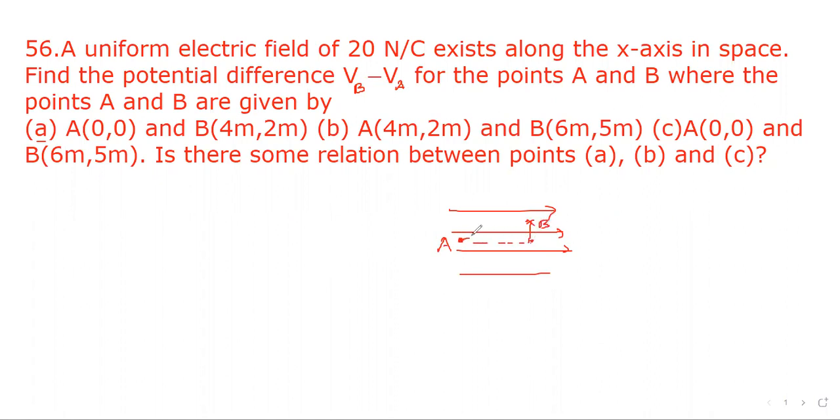Now we have to find out the potential difference between B and A. In this direction, potential will decrease. So VB minus VA for portion A will be electric field since E equal to V upon R in magnitude. So V will be E into R.